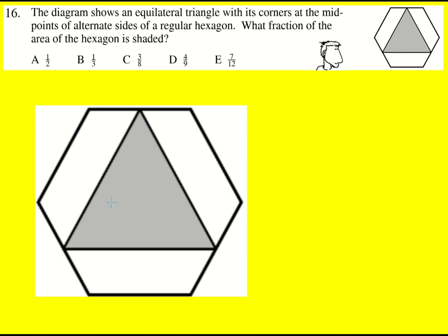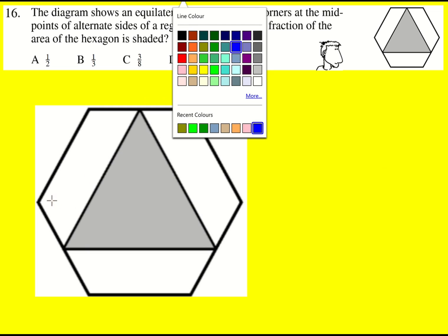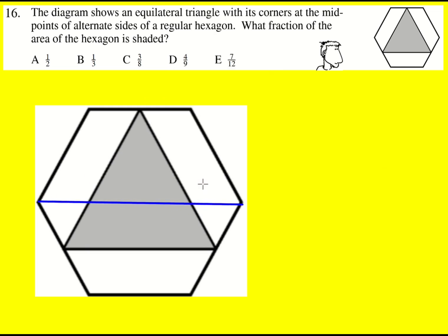really important to know that a regular hexagon can be split into equilateral triangles because a hexagon has angles of 120 degrees, so if we bisect each of these angles then we're going to get lots of 60 degree angles like so.